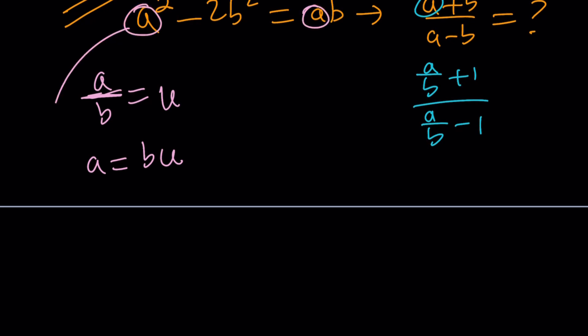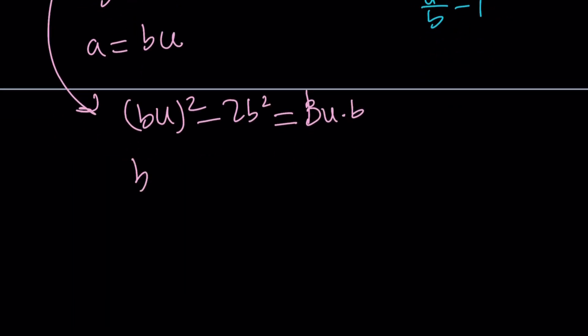Then replace a with bu everywhere. This gives us bu squared minus 2b squared equals bu times b. Let's simplify this. B squared u squared minus 2b squared equals b squared u. If you divide both sides by b squared, again, b does not equal 0. We have to satisfy that. If you divide, you're going to get this.